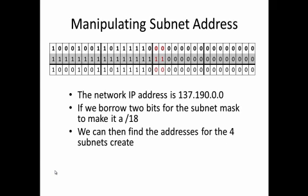What we are going to do is borrow from the right-hand side those bits within our network that could be possible host addresses, but we are going to borrow a couple more bits to create subnets. Starting with our base network address, we are going to borrow just two more bits, going to a /18 instead of a /16. Because we borrowed two more bits, we have a possibility of four subnets. Two to the second power equals four — that gives us the number of subnets.